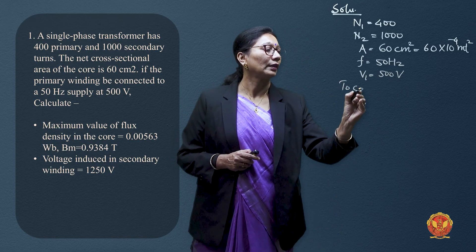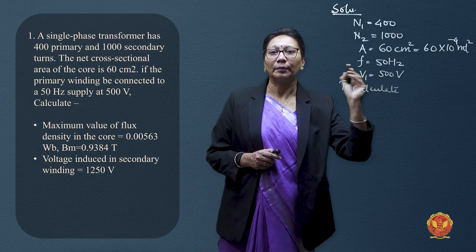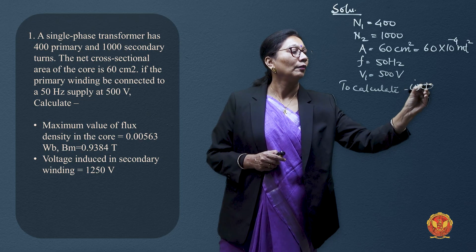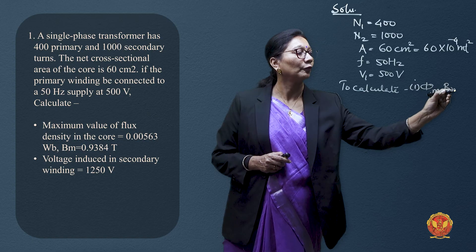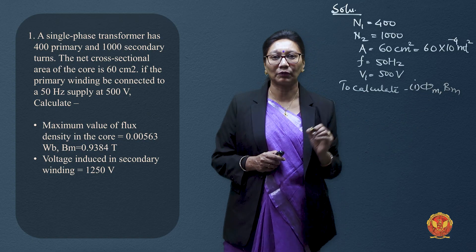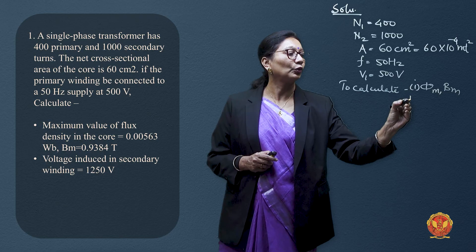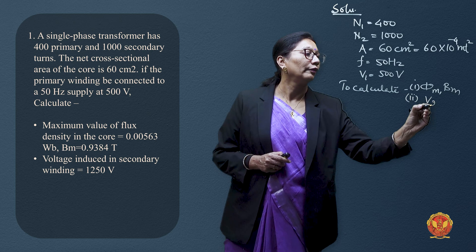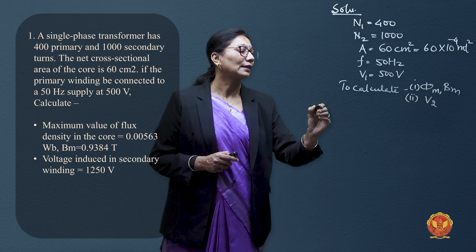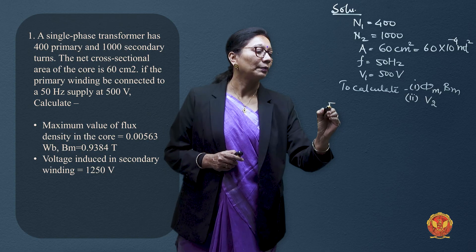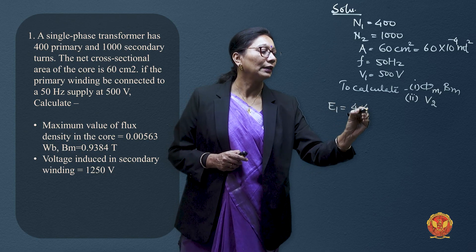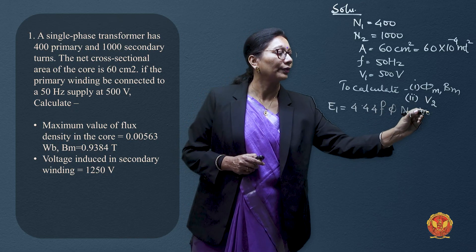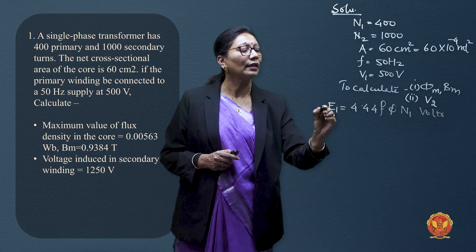We need to calculate the maximum value of flux, φm, and then the maximum flux density Bm. At the secondary, we need to calculate the secondary winding voltage V2. Starting with the EMF equation, the primary winding EMF can be given by E1 = 4.44 × F × φm × N1 volts, where E1 or V1 is 500 volts.